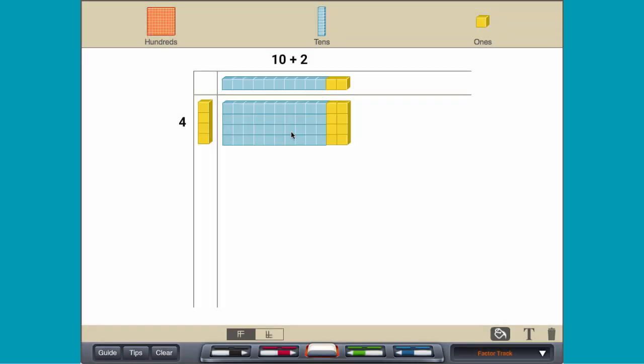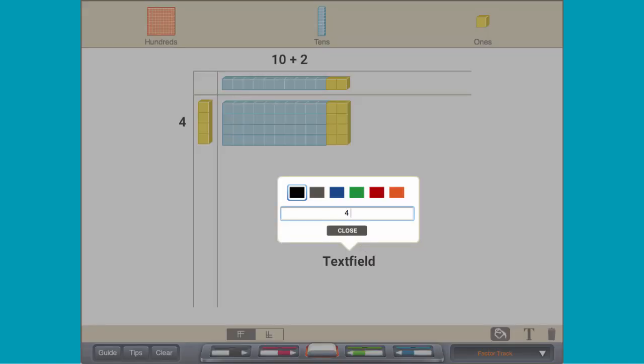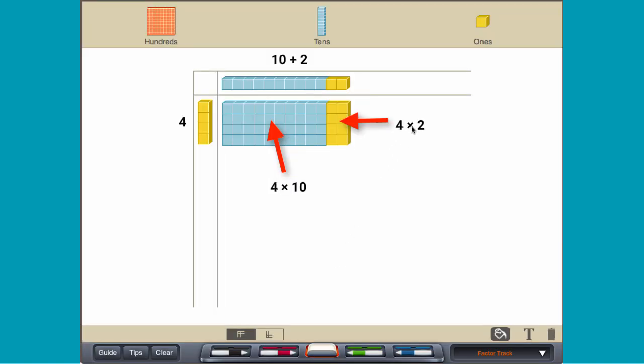So 4 times 12 can be thought of as 4 times 10 plus 4 times 2, or 40 plus 8, or 48.